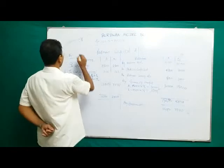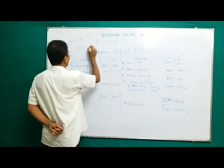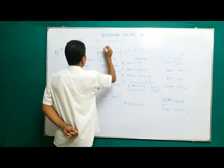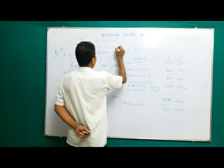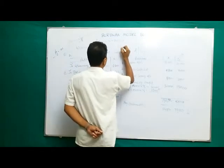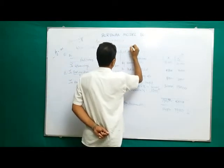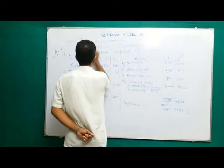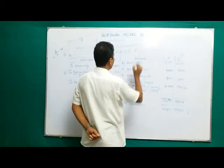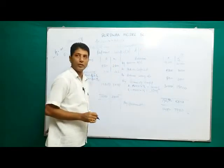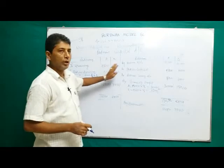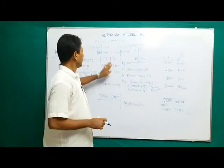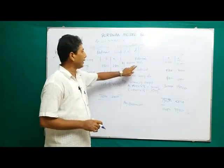When capital is fluctuating, only one account is maintained — this is the partner's capital account. The opening balance b/d is recorded in this single account for each partner.